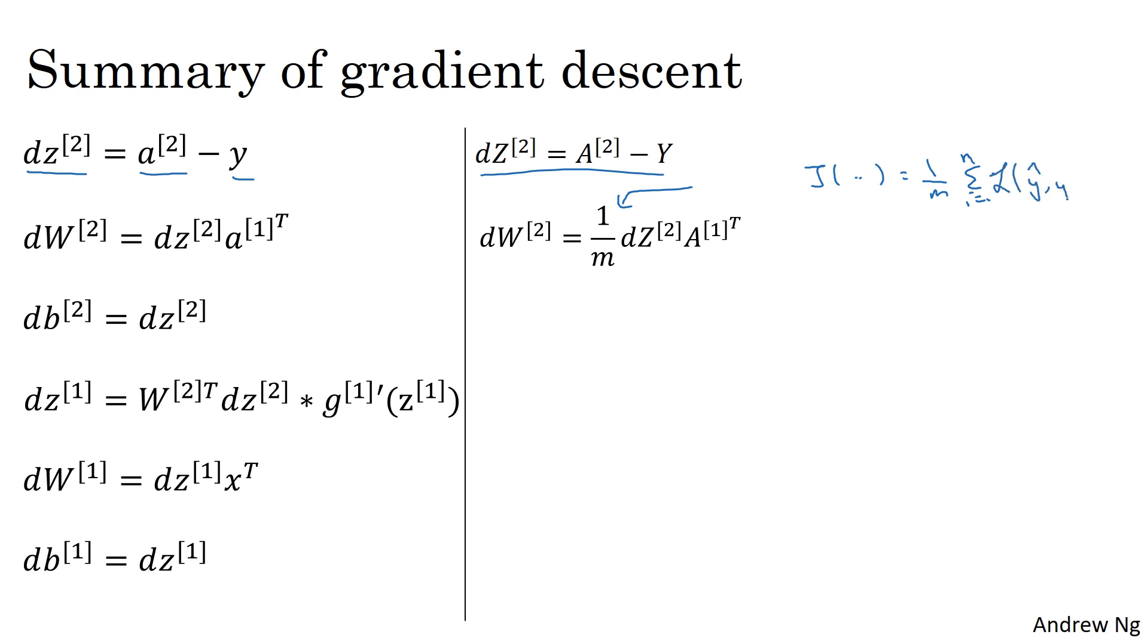So when computing derivatives, we have that extra one over m term, just as we did when we were computing the weight updates for logistic regression. And then that's the update you get for db2. Again, sum of the dz's and then with a one over m. And then dz1 is computed as follows. Once again, this is an element-wise product.